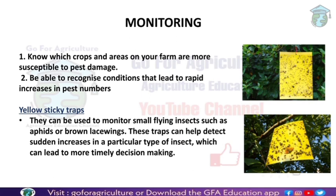For monitoring, traps are used — light traps, yellow sticky traps, and pitfall traps. For wheat crops, many kinds of traps can be used, with the objective of counting the number of pests or detecting the variety of pests present.